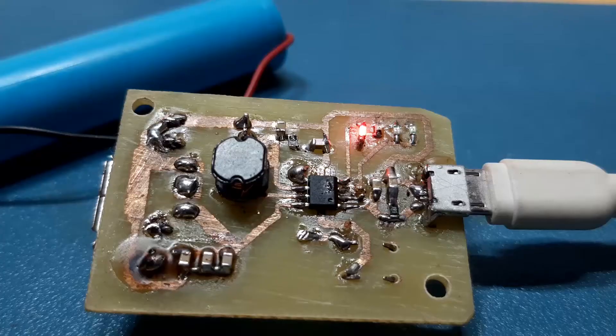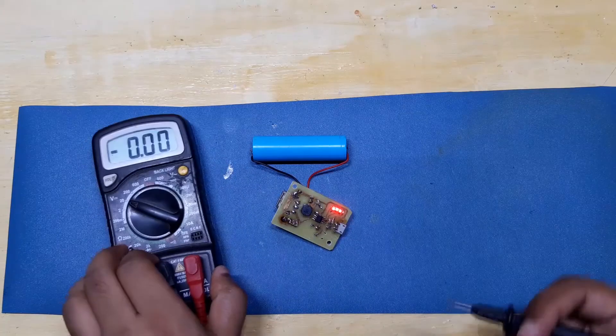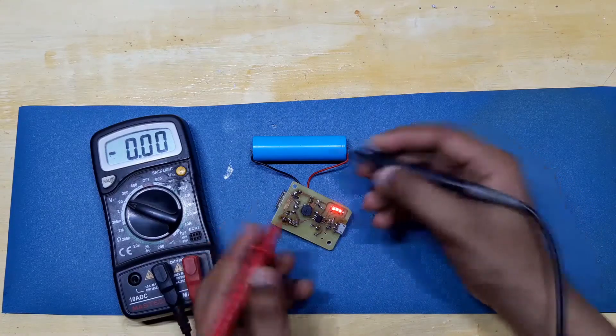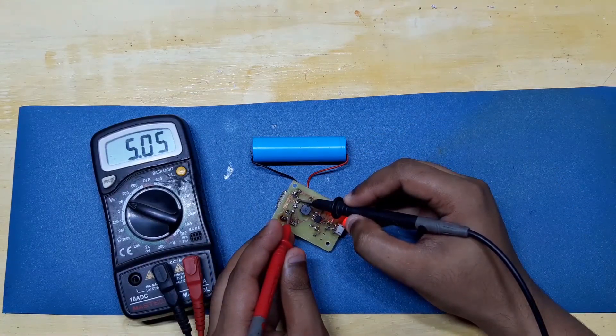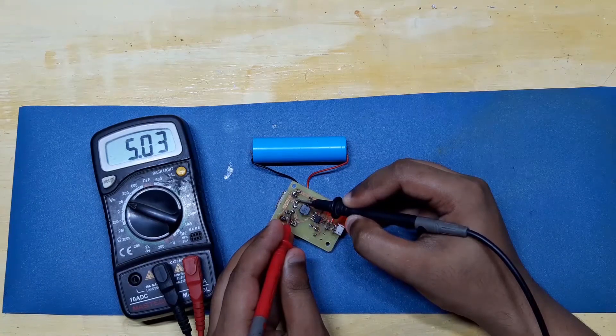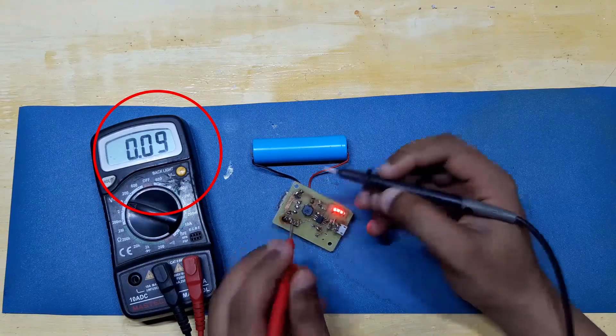Great. Now in order to final test this circuit, first check the voltage at the USB port. If it's showing 5 volts, then our circuit is working properly.